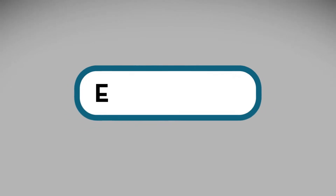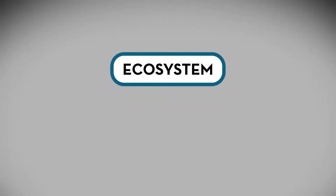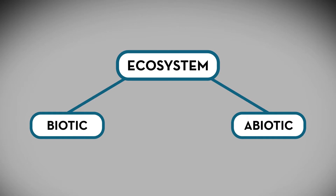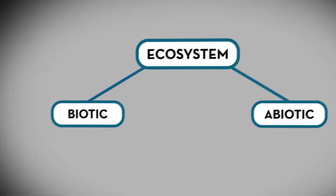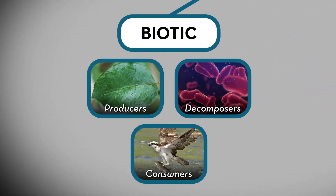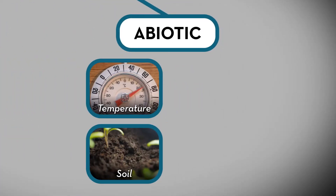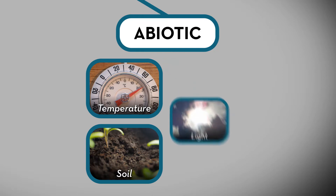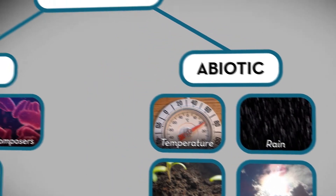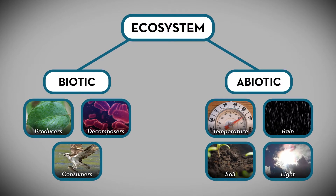Let's first define the word ecosystem. An ecosystem is a community of interacting biotic and abiotic factors. Biotic factors are organisms that are living, like plants, animals, and bacteria. Abiotic factors are environmental components like temperature, minerals in the soil, light, and rain. Together, these make up a community with each playing a different and important role to keep an ecosystem healthy.